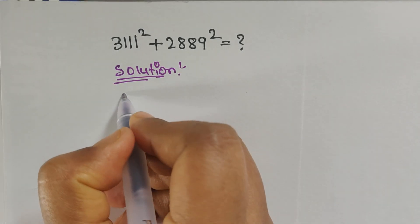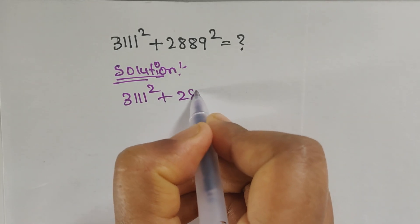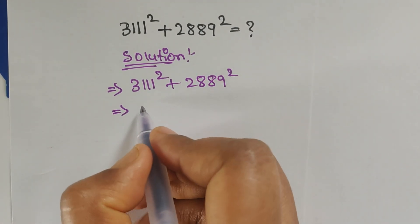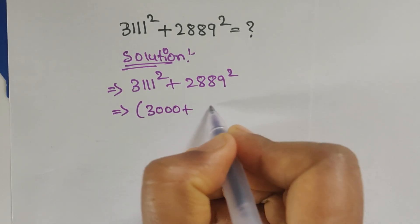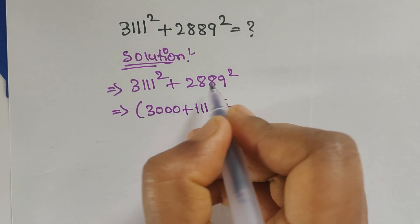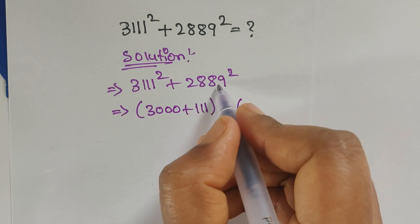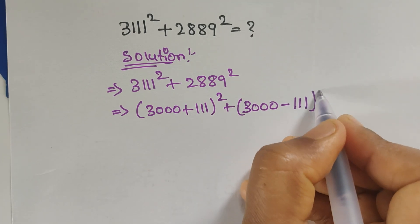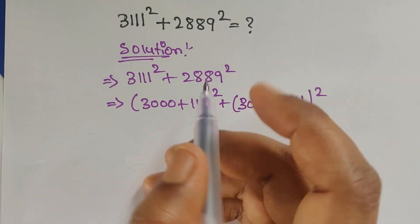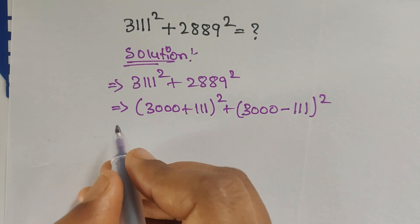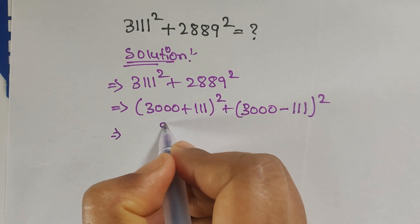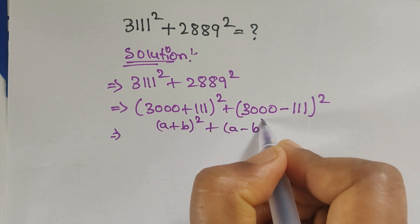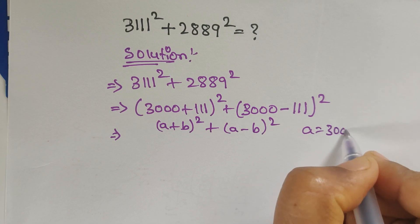So 3111² + 2889². We can write 3111 as (3000 + 111) whole square, and we can write 2889 as (3000 - 111) whole square — since 3000 minus 111 equals 2889. So this is in the form (a + b)² plus (a - b)².